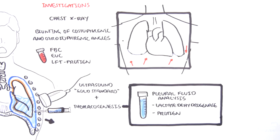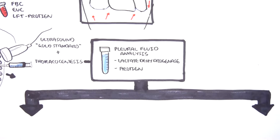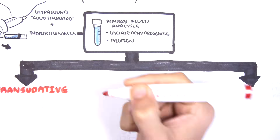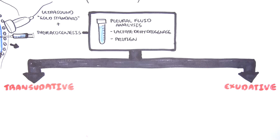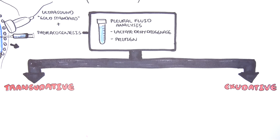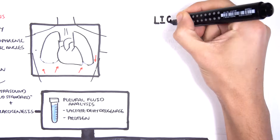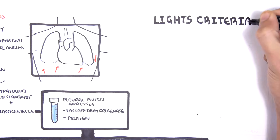This will help differentiate the two main types of pleural effusions, which are transudative pleural effusion and exudative pleural effusions. This is where we bring in what's called Light's criteria. Light's criteria will essentially tell you if the pleural effusion is from an exudative cause or a transudative cause.